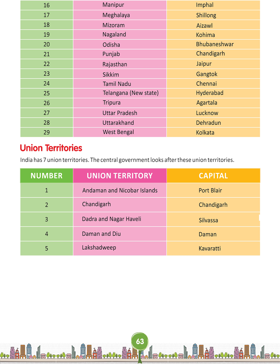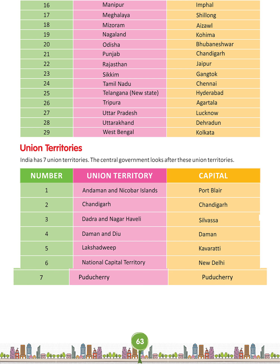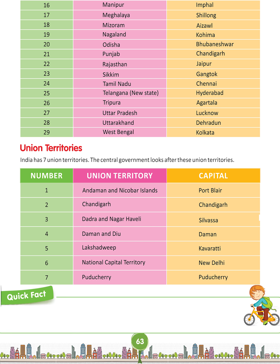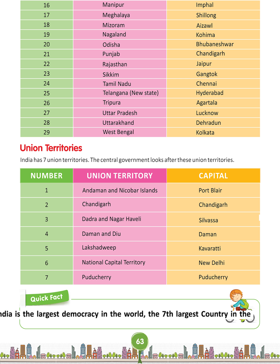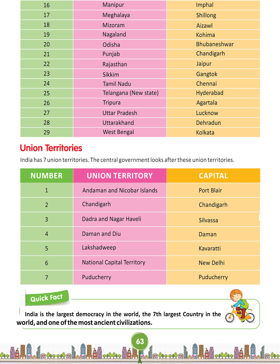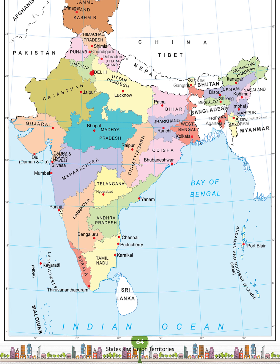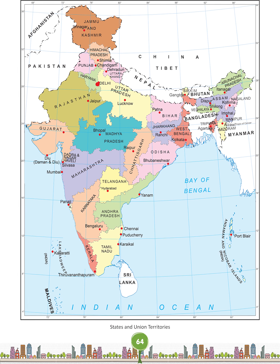Fifth: Lakshadweep — Kavaratti. Sixth: National Capital Territory — New Delhi. Seventh: Puducherry — Puducherry. Quick Fact: India is the largest democracy in the world, the seventh largest country in the world, and one of the most ancient civilizations. States and Union Territories.